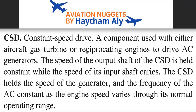We always hear about the IDG — Integrated Drive Generator. In any aircraft we have electrical sources like the IDG, engine generators, and the APU generator. We always ask ourselves: why is the electrical generation component on the engine called IDG, and on the APU it is called just a generator? In these short minutes we will explain the difference between IDG and generator, and we will speak about the definition of the Constant Speed Drive, which is a part of the IDG.